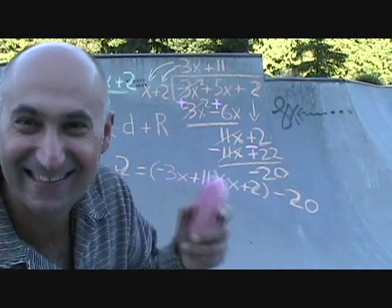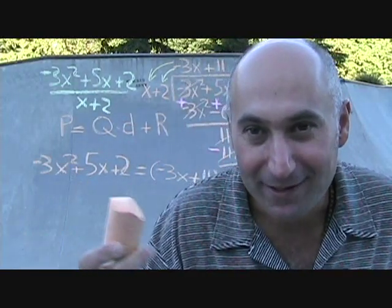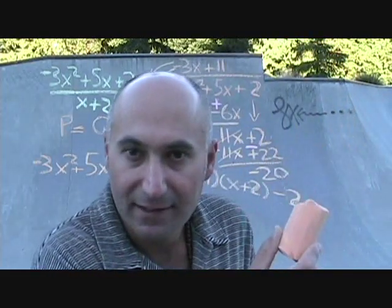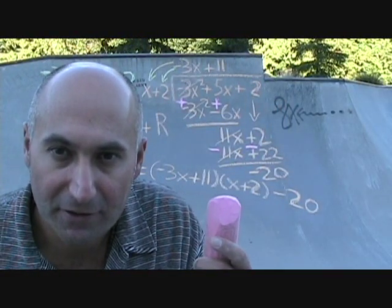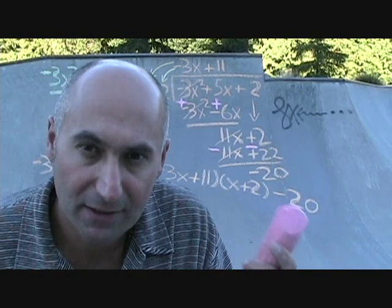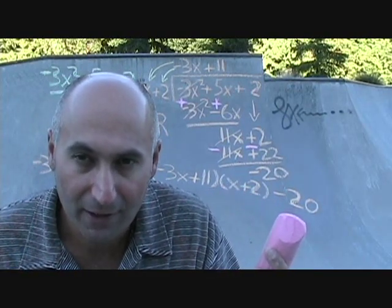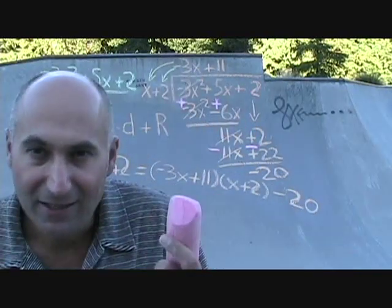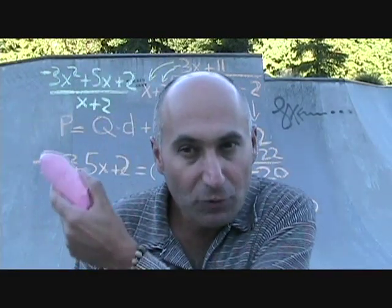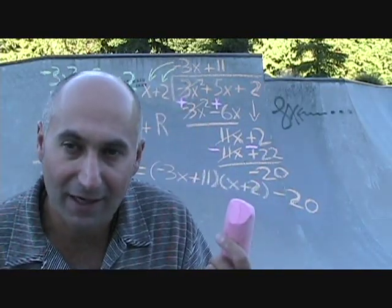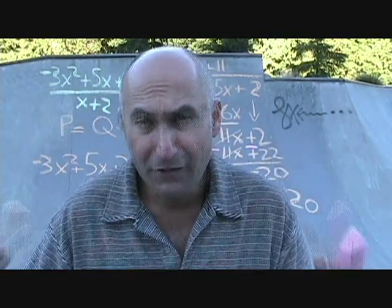So basically what we have is: our numerator equals the quotient times the divisor plus the remainder. The numerator equals negative 3x plus 11, times x plus 2, minus 20. If you FOIL that out and subtract 20, you get the original numerator back. We've rewritten the original expression in a different form.